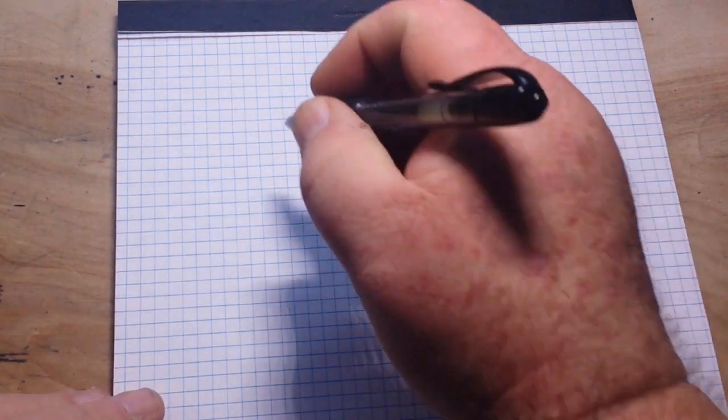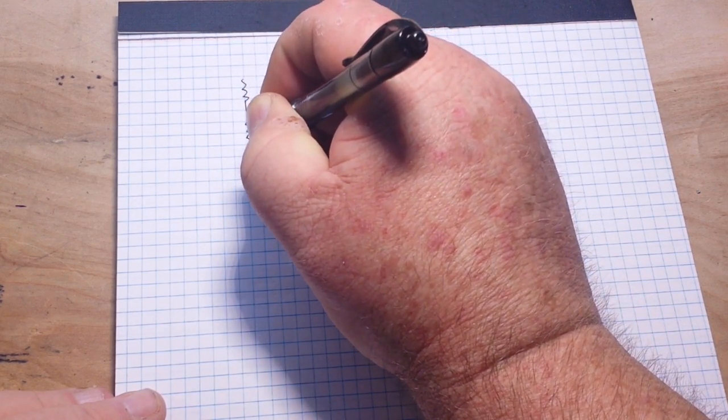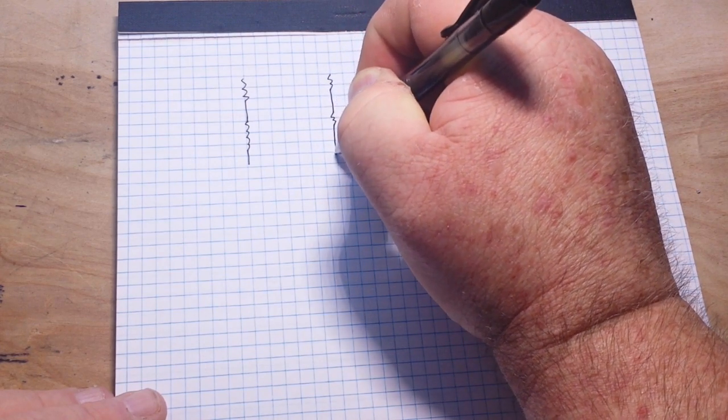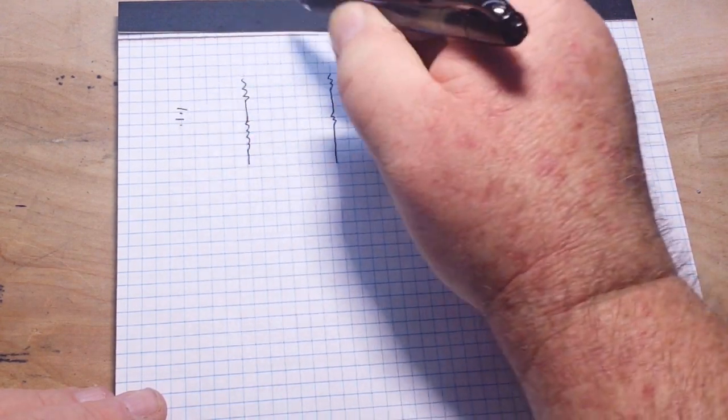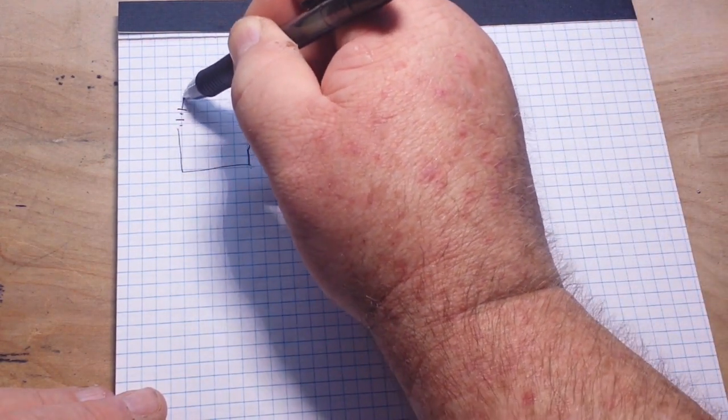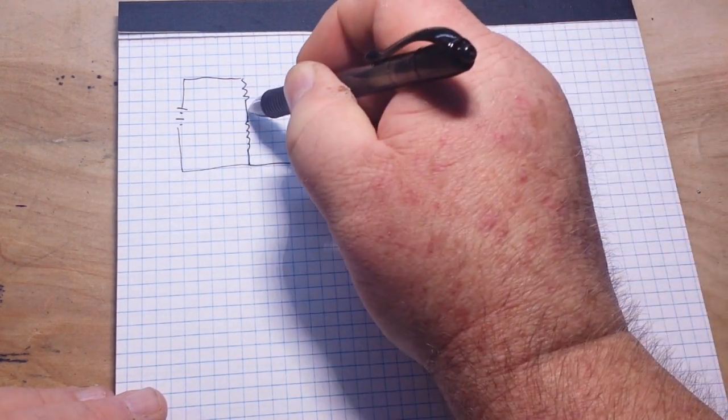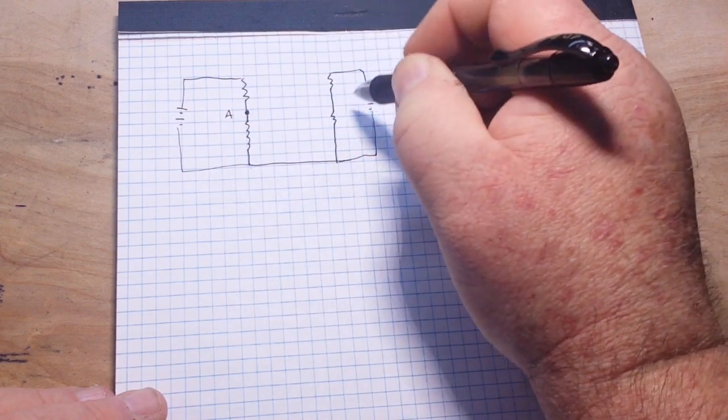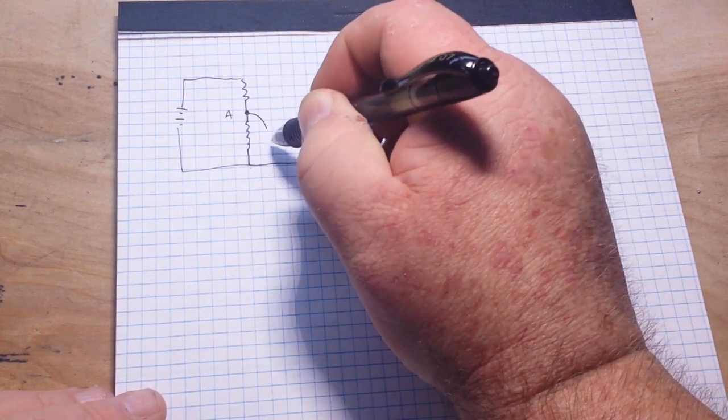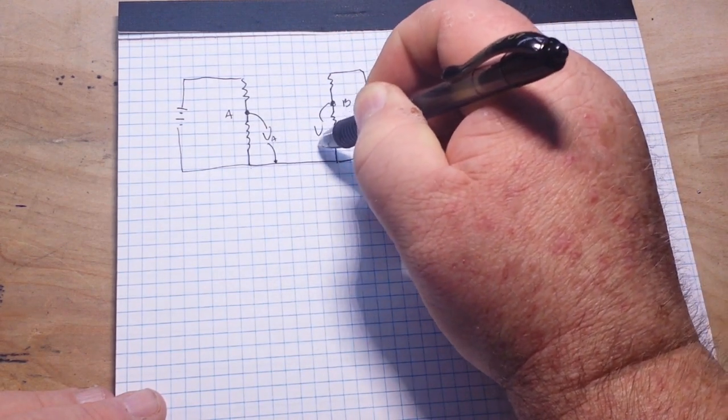We will do voltage dividers. So, have a resistor here, resistor here, resistor here, we'll have a voltage source here, a voltage source here, we'll do a little something like this, connect our grounds together, we'll call that node A, that one B, and what we're going to want to know is the voltage here at A and the voltage at B.